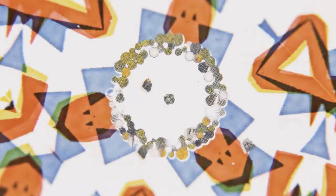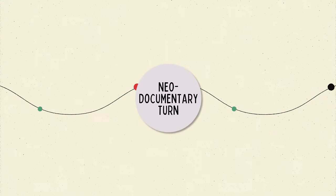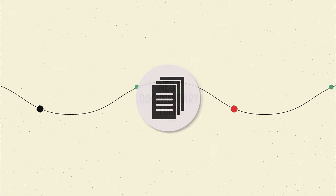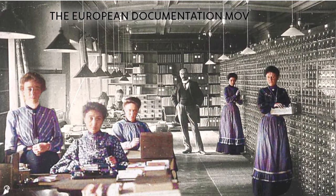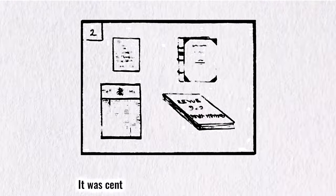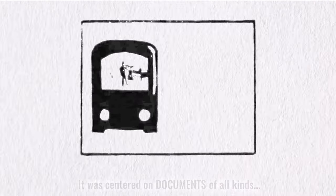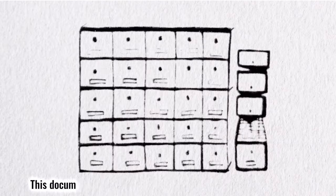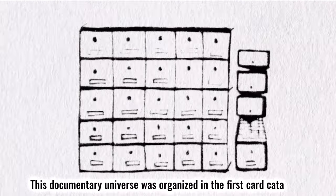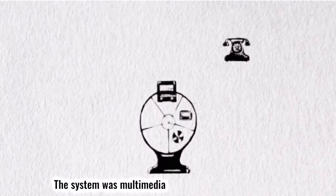By the 1990s, some scholars wanted a less psychological approach to information. They championed a materialist and historical alternative here called the neo-documentary turn. In actuality, it re-turned information science to its original favorite topic — documents. In early 20th century Europe, Belgian lawyer and bibliographer Paul Otlet imagined and built the first global information system for documents, centered on documents of all kinds. An emerging technology of the day enabled network access, and this documentary universe was organized in the first card catalog. The system was multimedia, with film and audio material.